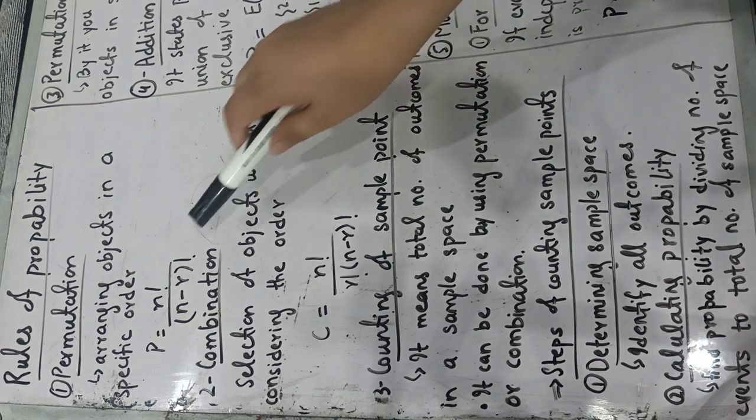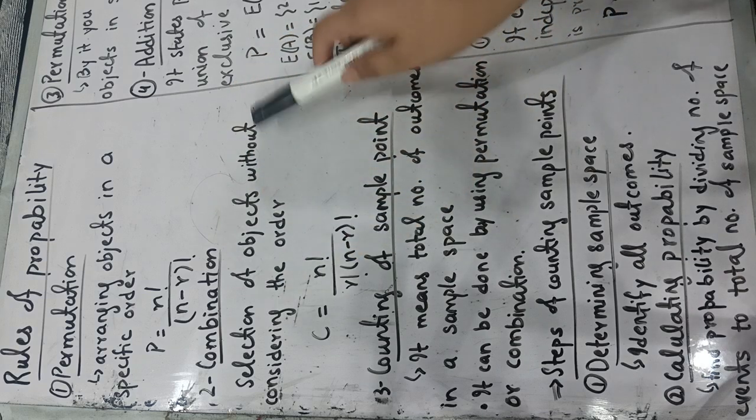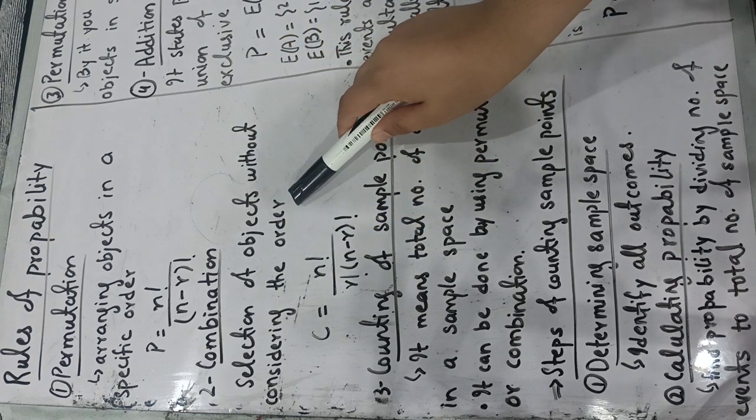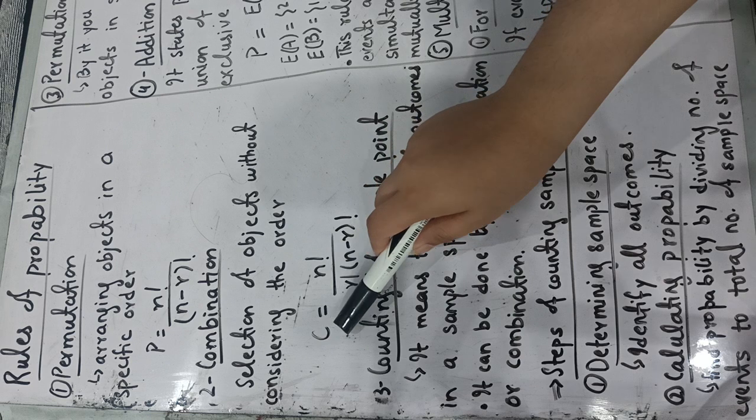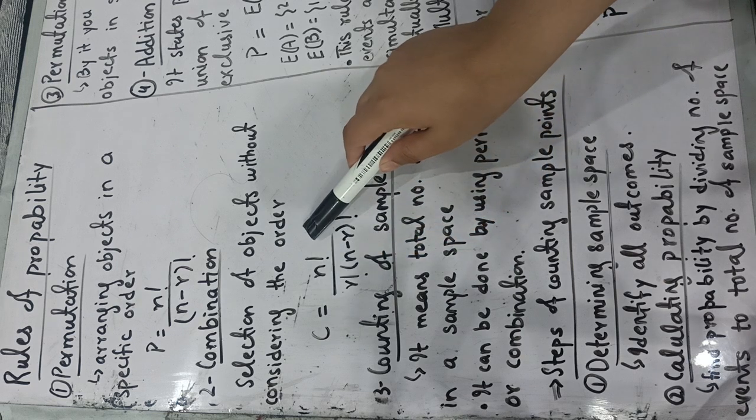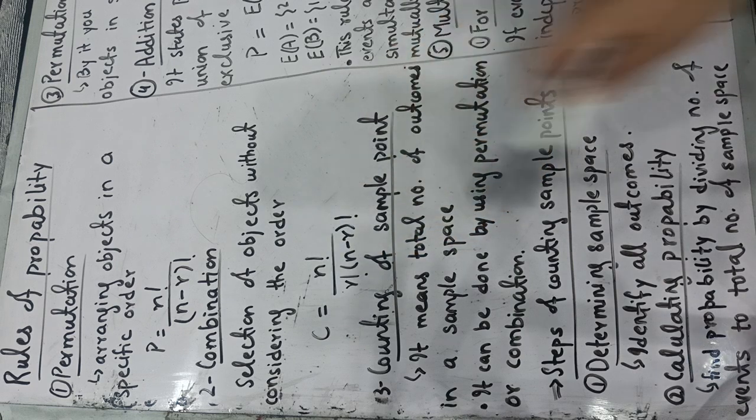The second rule of probability is the combination. It is a selection of objects without considering the order. Its formula is C equals n factorial over r factorial times n minus r factorial.